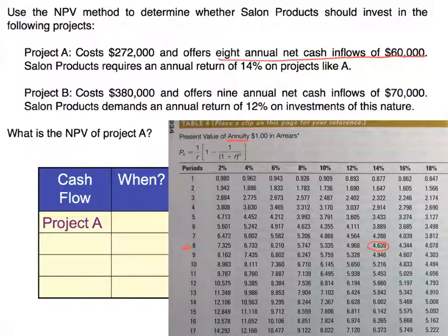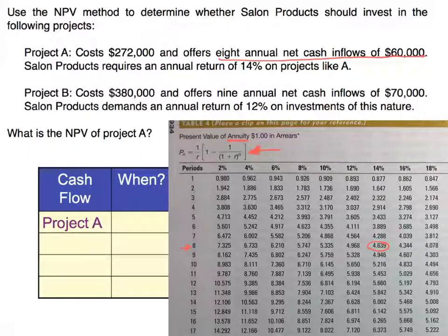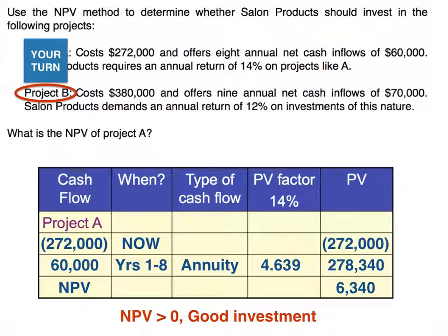When you're using these tables, the factors you're looking up incorporate the compounding of interest, the interest rate, and the periods. For finance-oriented viewers, there is a formula to actually calculate the factor directly.